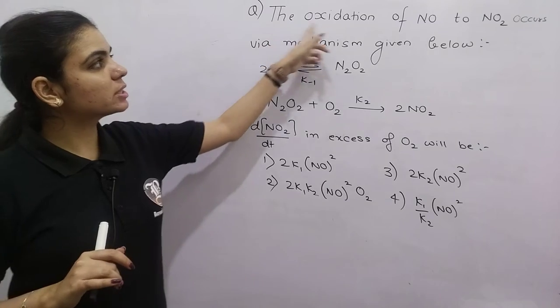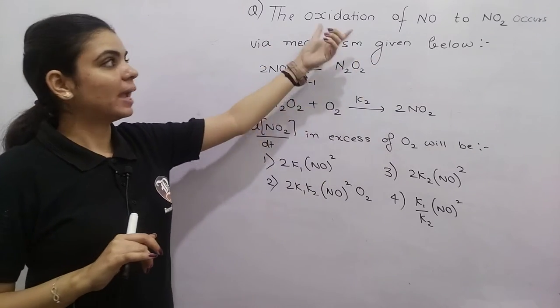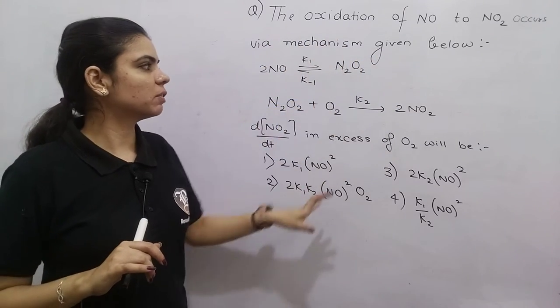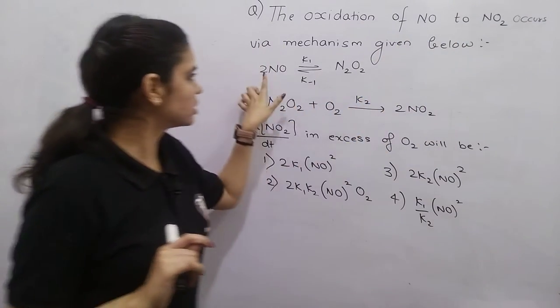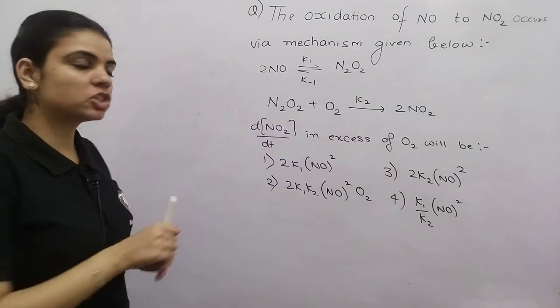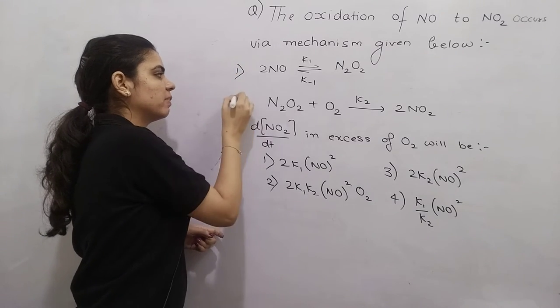The question is: the oxidation of NO to NO2 occurs via mechanism given below. We have a mechanism with only 2 steps provided.